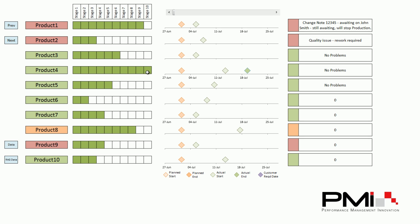We've also got a RAG status to show any particular problems during production. We can see product 1, even though it's almost complete, has got a red colour here with a note saying there's a change note issue waiting on John Smith that will stop production. So you can immediately see that it's probably not going to progress and complete until this change note has been sorted.